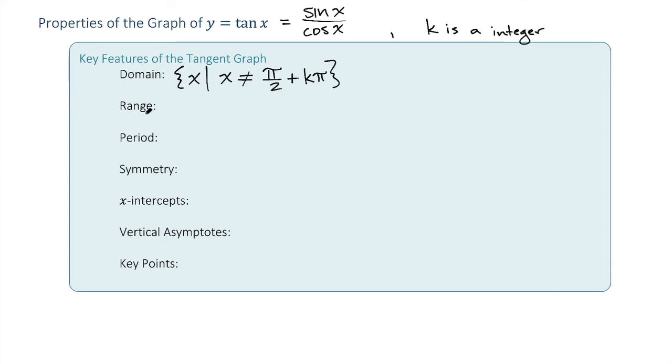All right, the range. In the graph of the tangent, we saw that it went up forever and down forever. Our range is all real numbers. So that's the set of all y values such that y is between negative infinity and infinity.